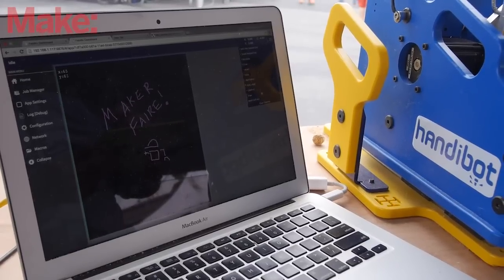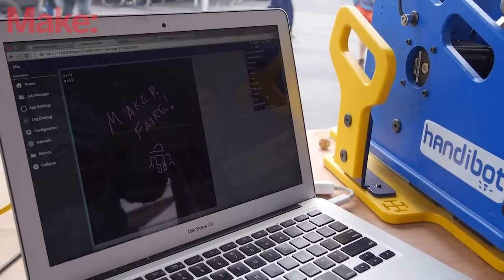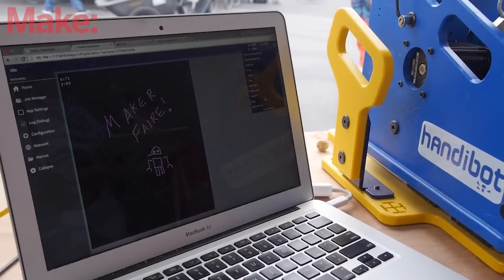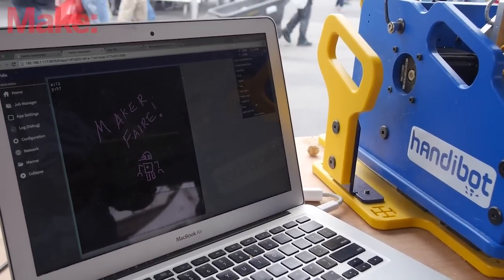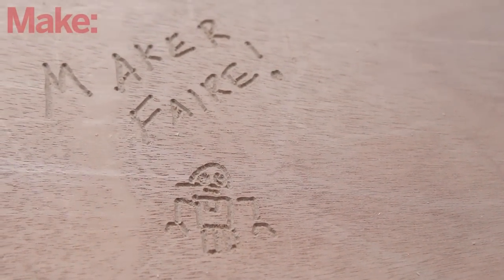The biggest news about HandyBot is the FABMO software platform which is the open source platform that runs the tool, lets you connect to the tool with any device—phone, tablet, Mac, PC, Linux—and that provides a framework for developers to develop apps for the tool that make it more useful.